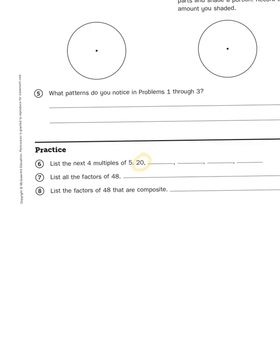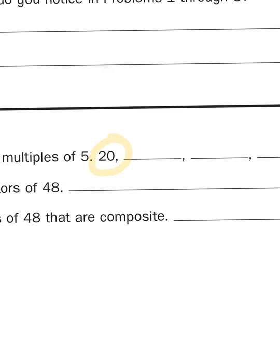Skip count by fives, starting at twenty. So what comes after twenty? If I'm skip counting by fives, what would be twenty, five, and then thirty. Then thirty-five. Then forty.